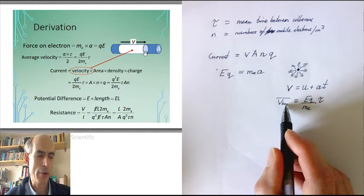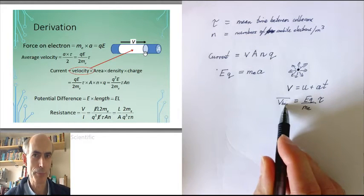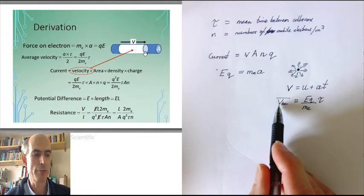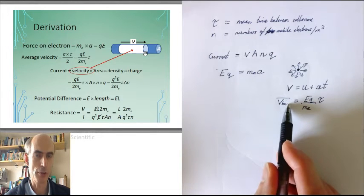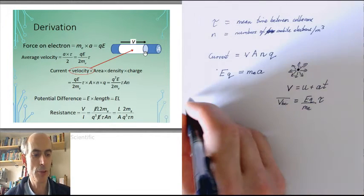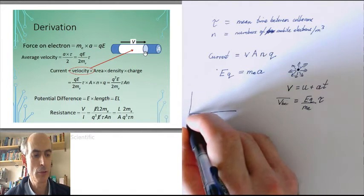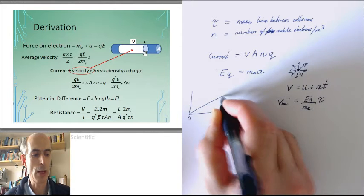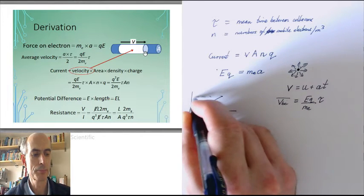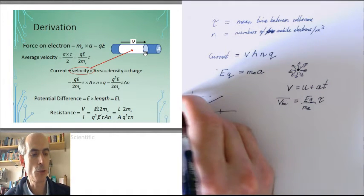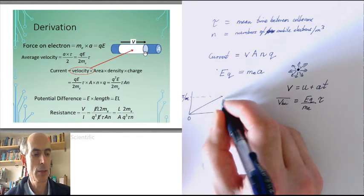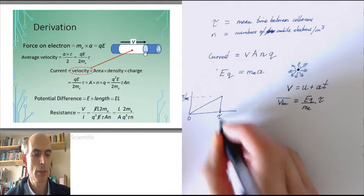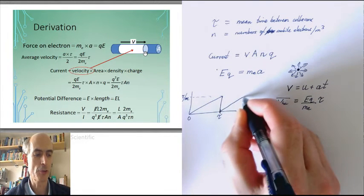The mean velocity, however, will be exactly half that. Because the velocity starts at zero and ends up at v_BC just before a collision. So the velocity is actually increasing from zero up to a value of Eq τ over m_e, over a period of time τ, after which it goes back to zero and starts up again, and so on.